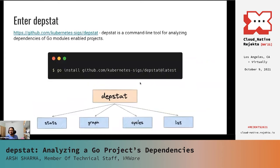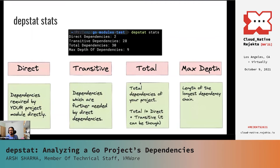Depstat is a command line tool for analyzing dependencies of Go modules enabled projects. You can install it by running go install github.com/kubernetes-sigs/depstat and getting the latest release, or you could also grab the latest binary from the Depstat repository. It provides us with four subcommands, each of which we'll now be looking at in detail. The first and most important from the point of view of upstream Kubernetes is the stats subcommand. Running depstat stats in your project directory would give you an output which should look something like this.